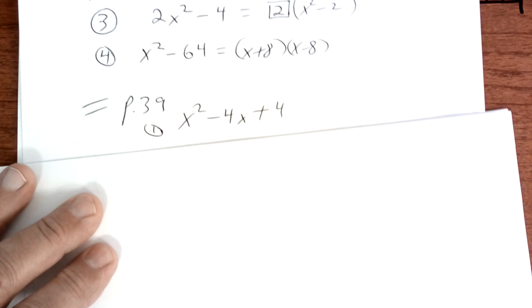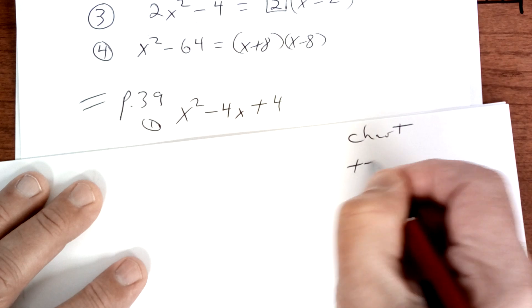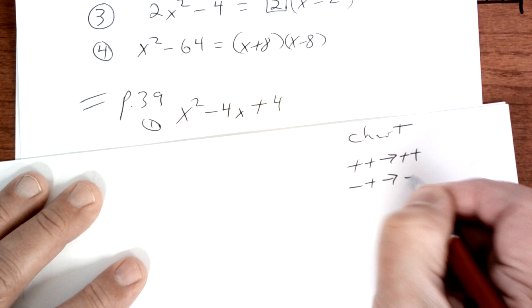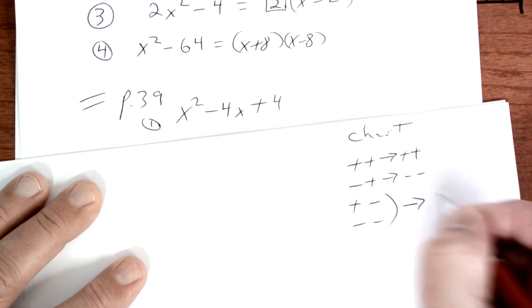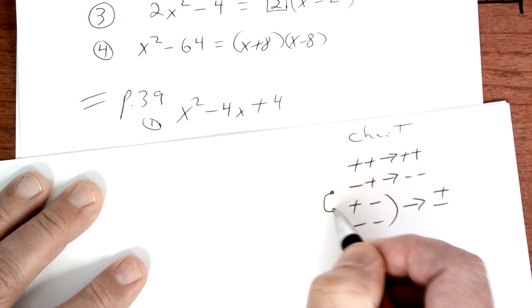This one right here is new, so copy that down. Go to page 39. Alright, there's a chart you need to memorize. Write this down. Okay, copy that down. And know that this one is not the same as that one. They're not the same.